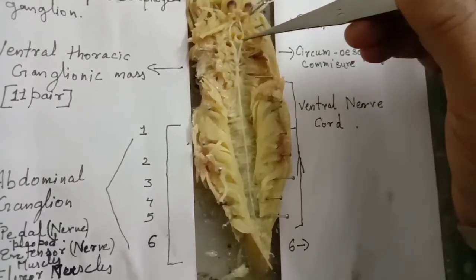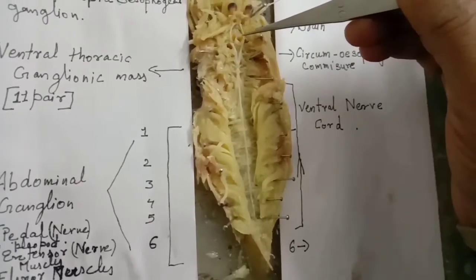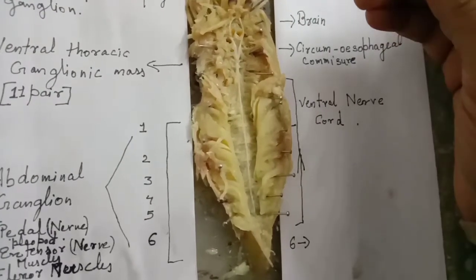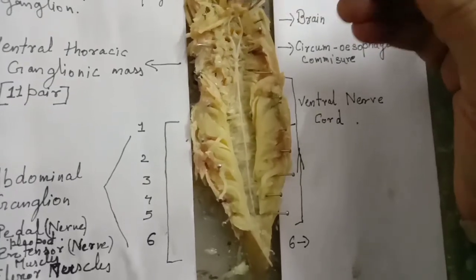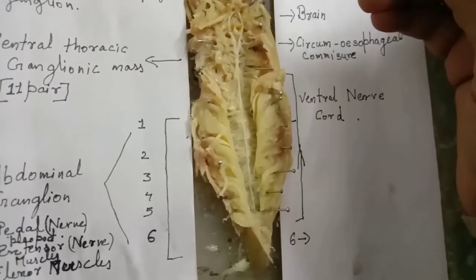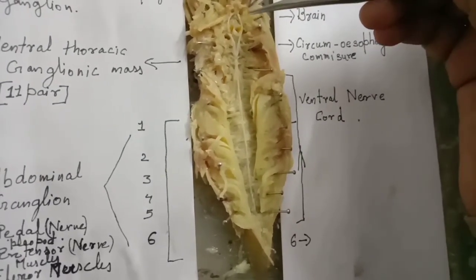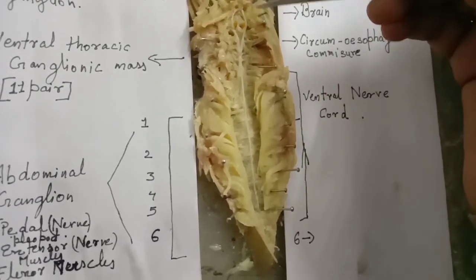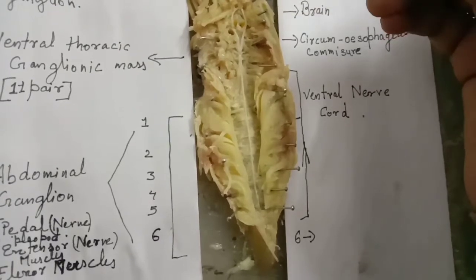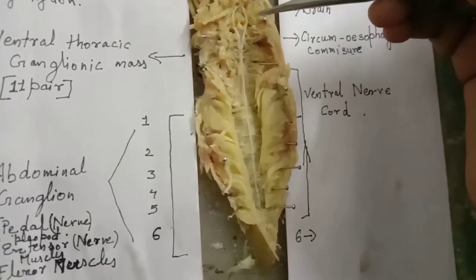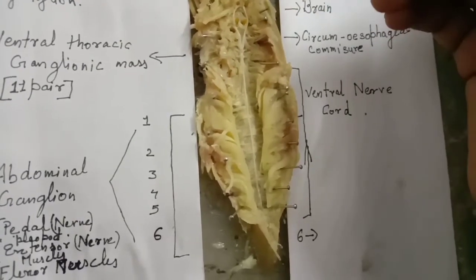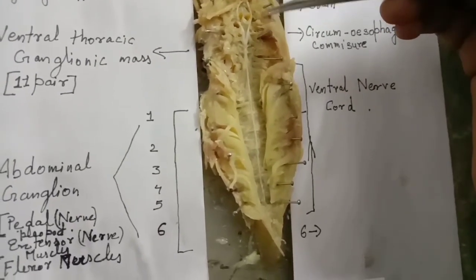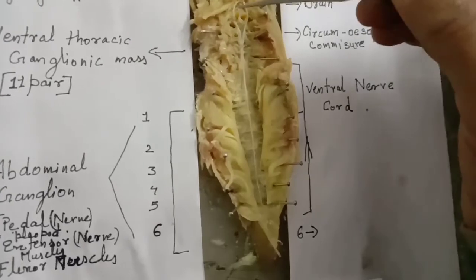On each side of the brain, nerves are given: antennary nerve to antennules, optic nerve to compound eye, static nerve to statocyst, antennary nerve to antenna, and tegumentary nerve to the labrum.